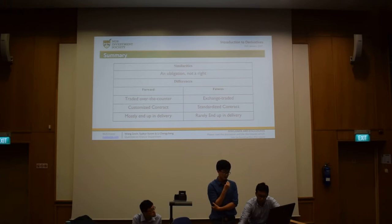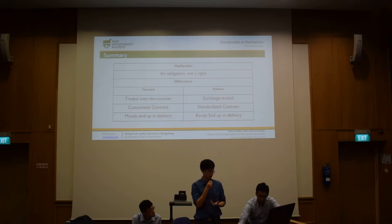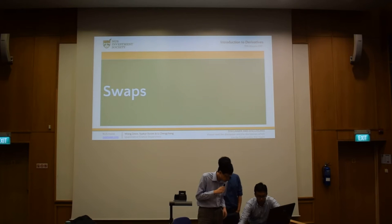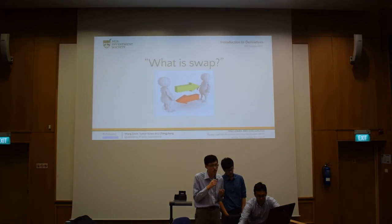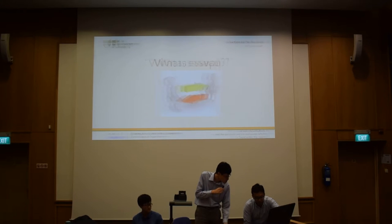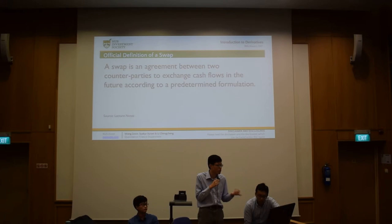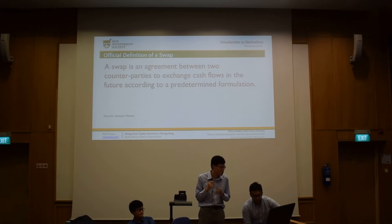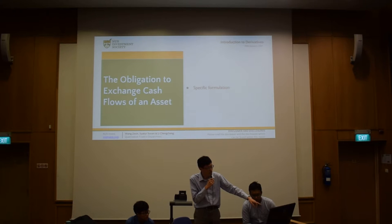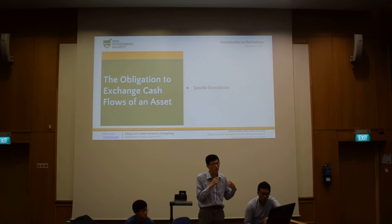With these two basic derivatives as a foundation, we will move on to the swap derivative. The English word 'swap' refers to the action of exchanging items. As suggested by the diagram, a financial swap is officially an agreement between two parties to exchange cash flows in the future. Unlike forwards and futures where you buy or sell an asset, with a swap what you exchange is cash flows — a series of payments.